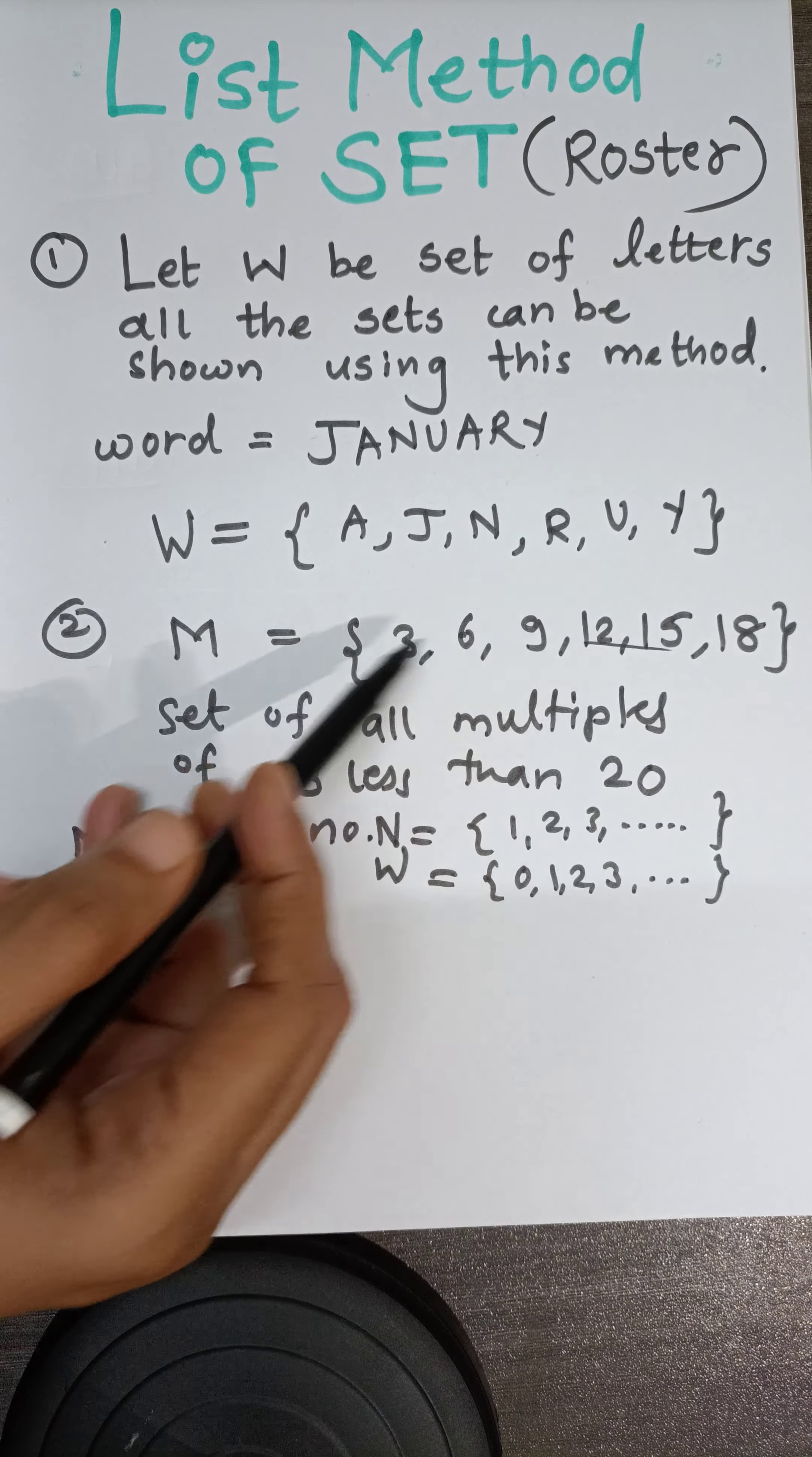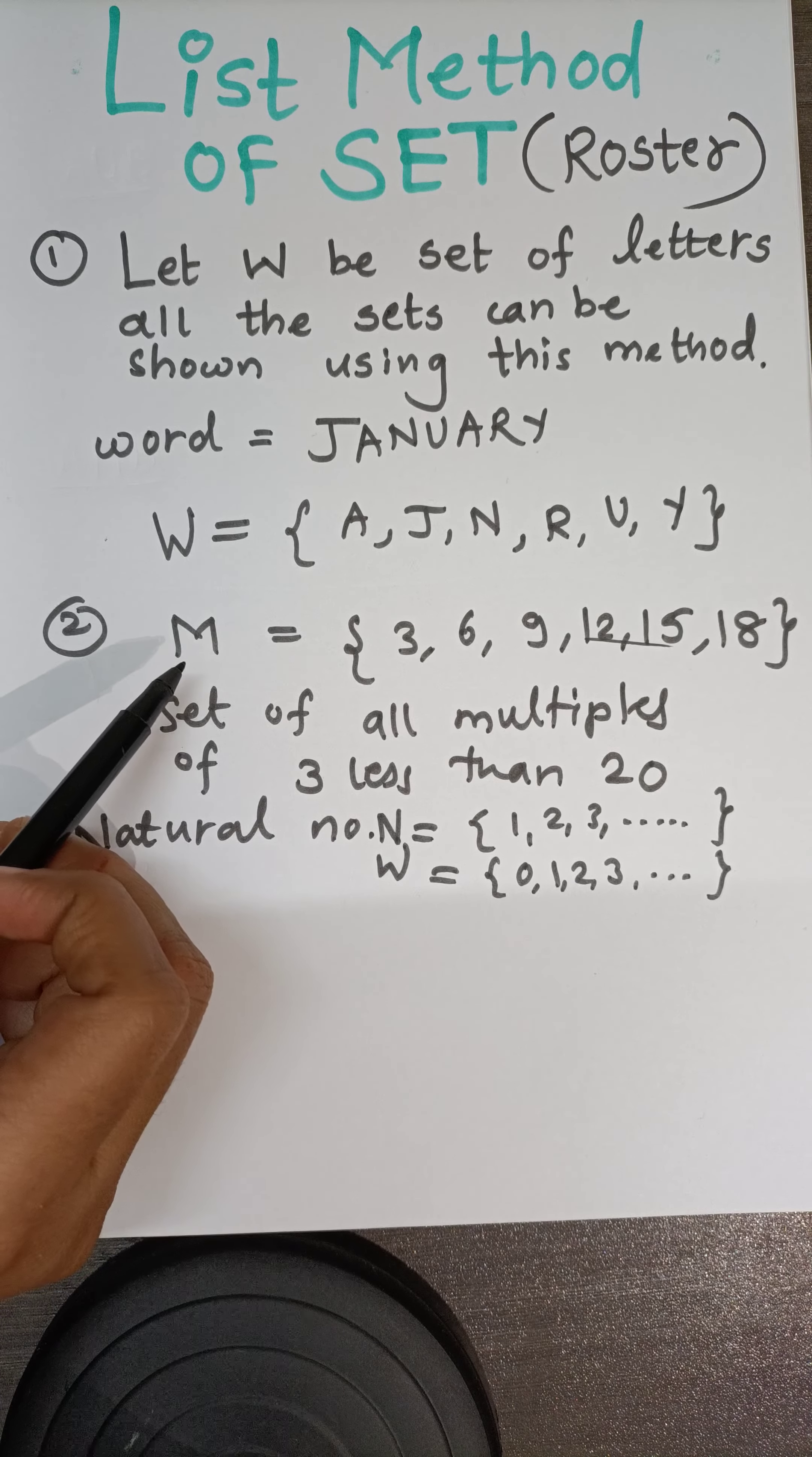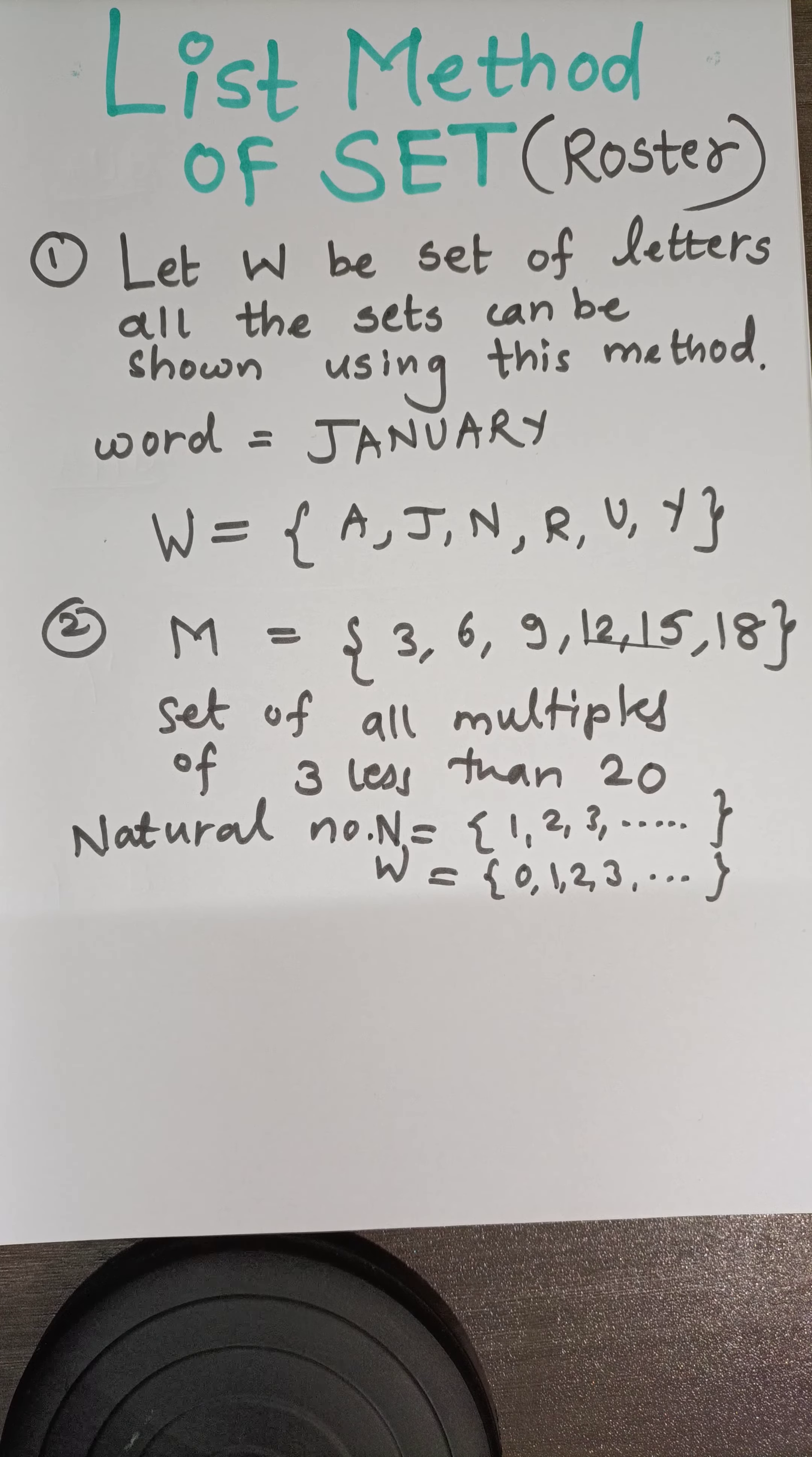So all the elements are written here separated by commas and the set will be included in curly brackets, and the set name is indicated with letter M. So in this way, list method is used to describe or we can list out all the elements in the set.